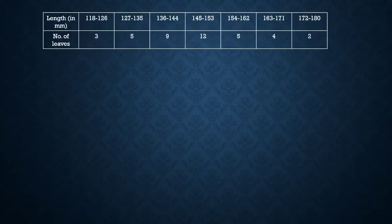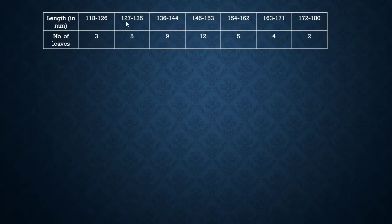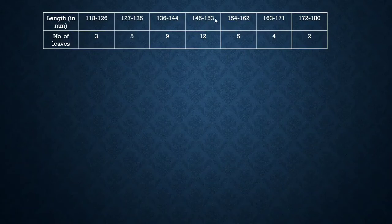In Question 4, lengths of 40 leaves are measured to the nearest millimeter. The class intervals — 118–126, 127–135, 136–144, and so on — are discontinuous. To find the median we must first convert this discontinuous distribution into a continuous one.